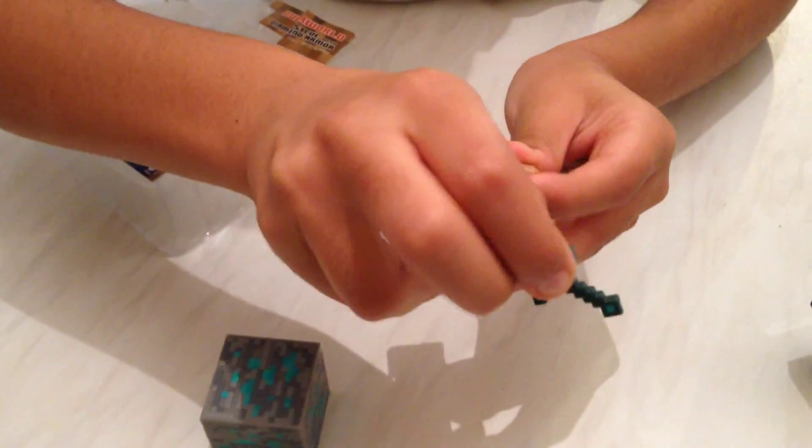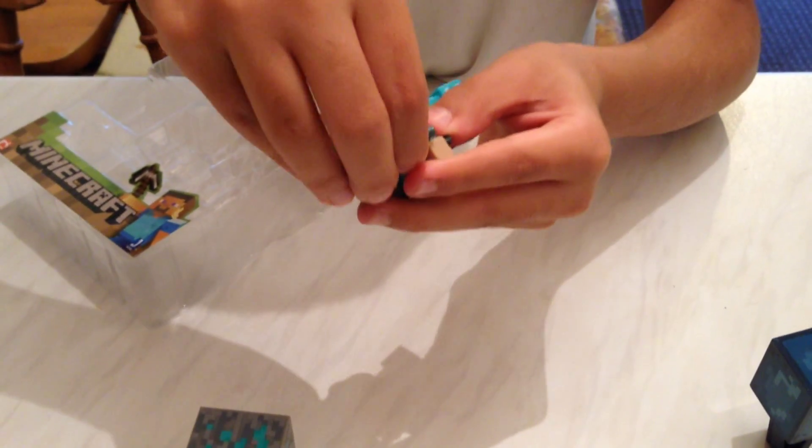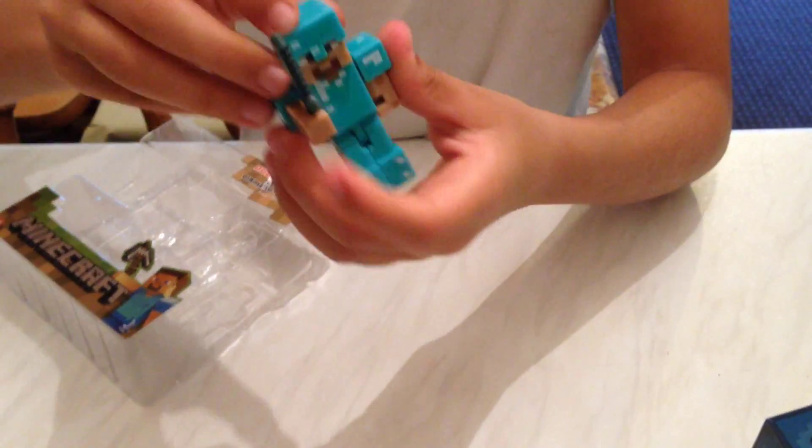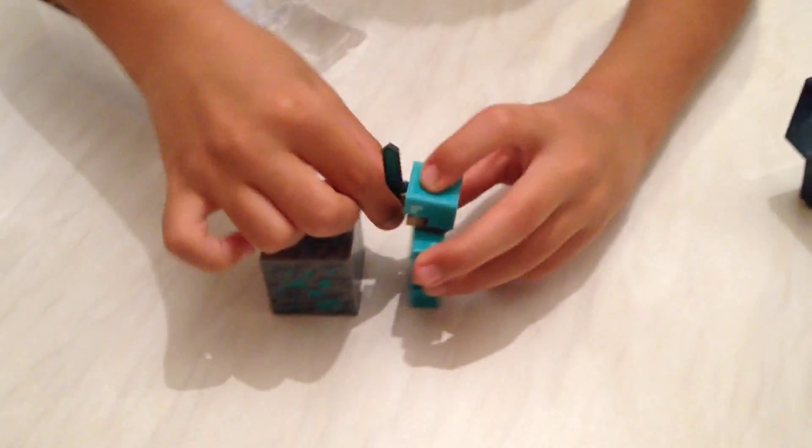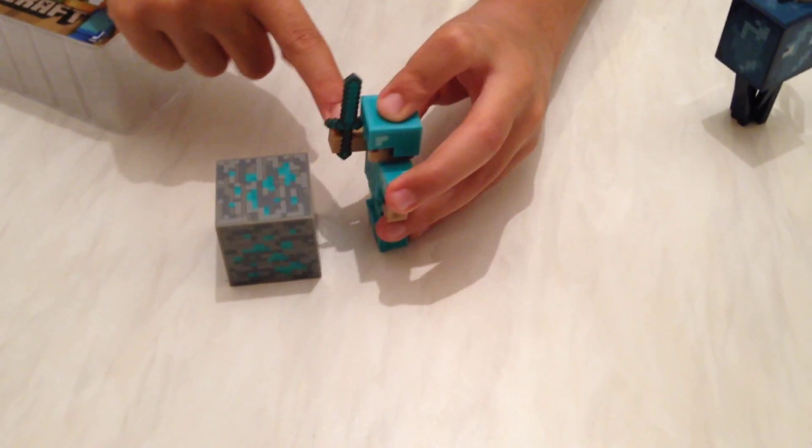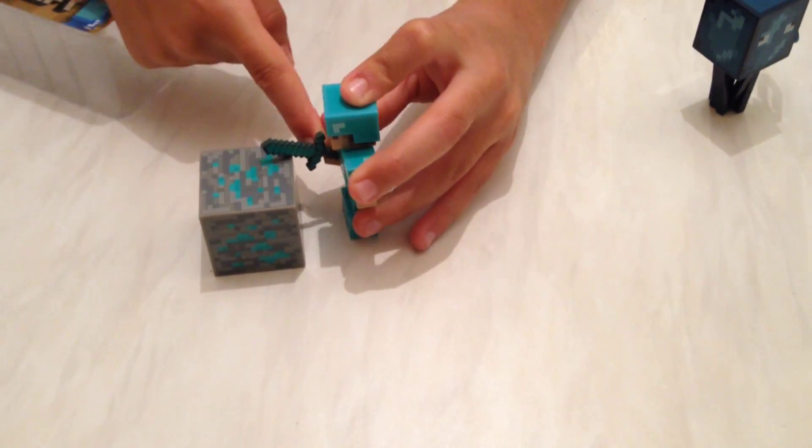He can even take off his clothes like so. Here's his hat, okay. And you have this diamond block, which is just a diamond block which looks really good, and you have the diamond sword which fits into the grip.